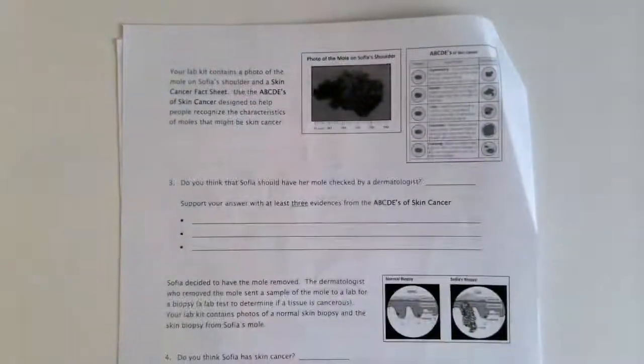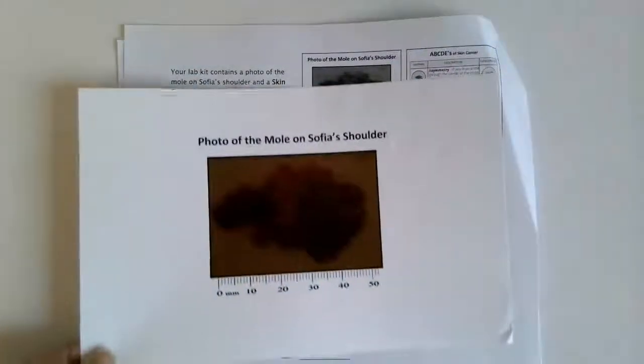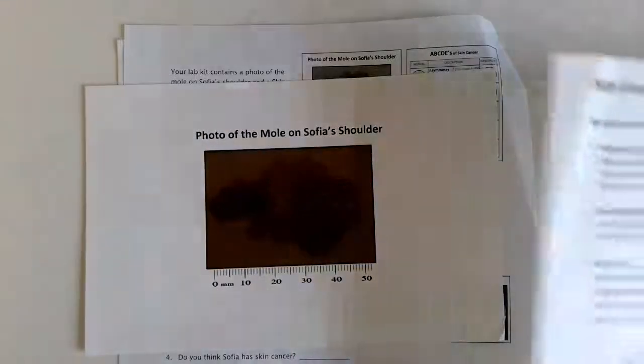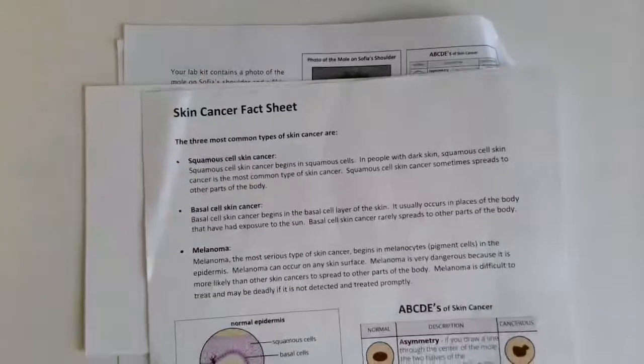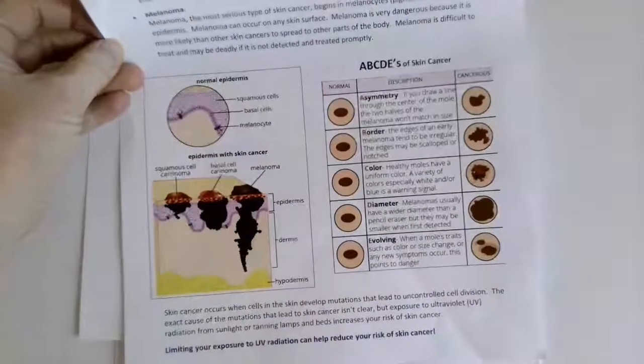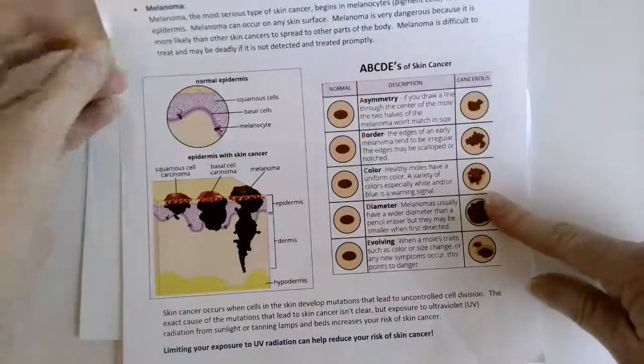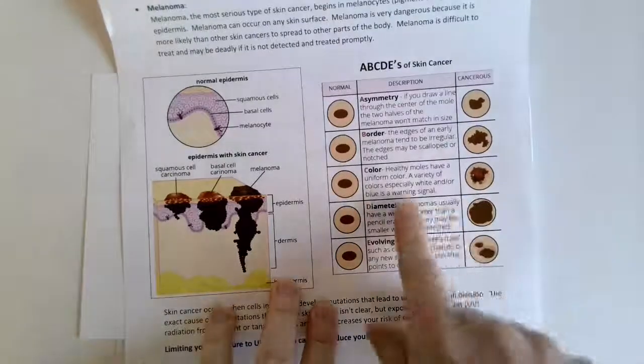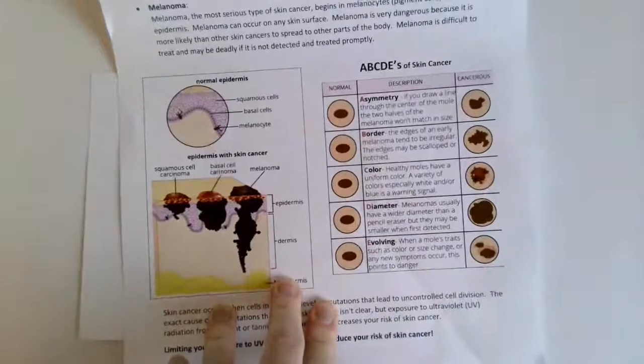Then you're going to reach into your lab kit. As you move to the next page, it says go into your lab kit and you have a picture of Sophia's mole. You also have skin cancer fact sheets where it's going to give you some information, but then down at the bottom it's going to give you a very helpful sheet called the ABCDE's of skin cancer. These are really important things about skin cancer that you should just know - everybody should know this.